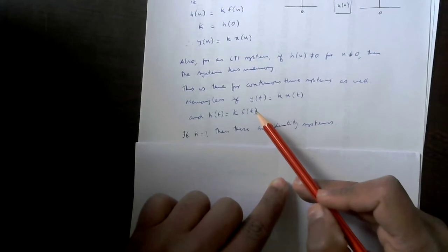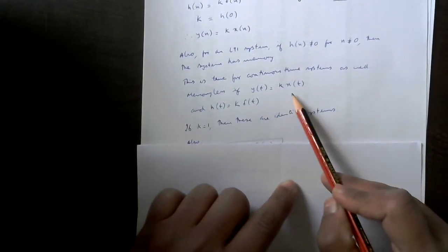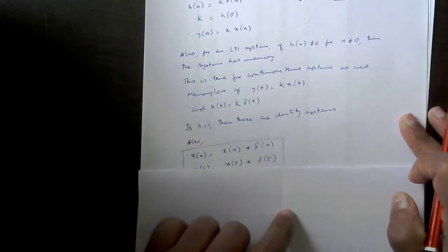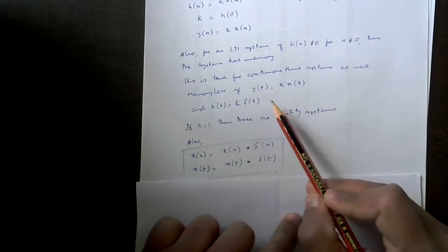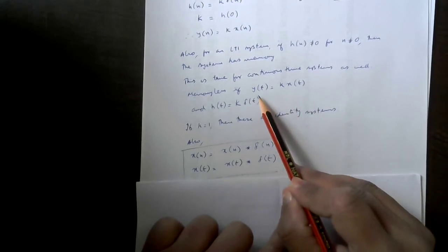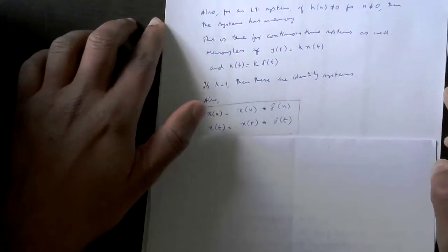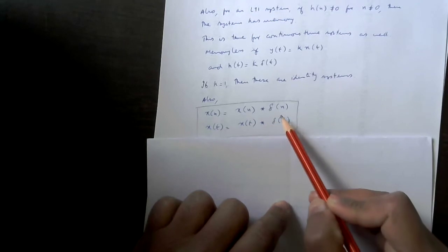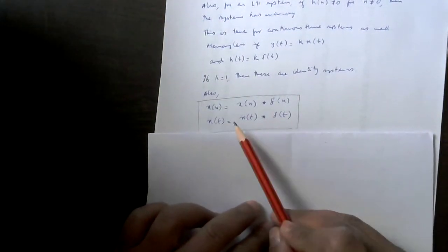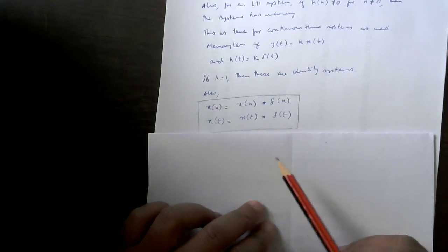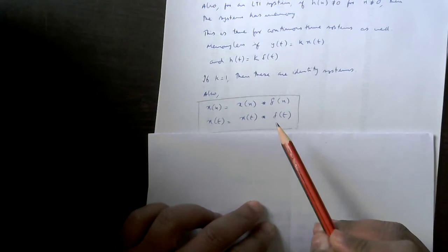For continuous time, y(t) = k·x(t) and h(t) = k·δ(t), a scaled version of the delta function. If k = 1, then y(t) = x(t), which is an identity system. These arguments also give us an important and useful relationship: x(n) = x(n) * δ(n), and similarly x(t) = x(t) * δ(t). Convolving a signal with an impulse gives back the same signal. This is true in both continuous time and discrete time.